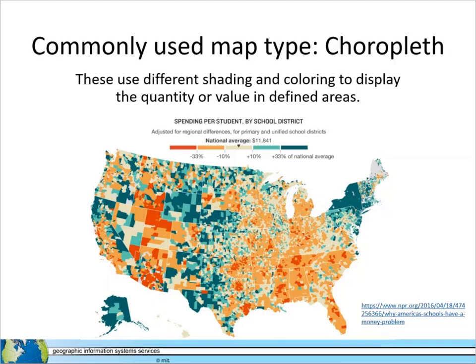Choropleth maps. One of the most commonly used types of maps is a choropleth map. Choropleth maps use different shading and colors to display the quantity or value in defined areas. Choropleth maps are best used with polygon data so it's easier to see color variations.